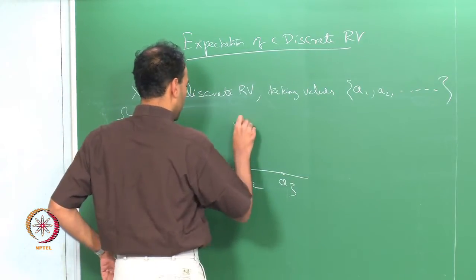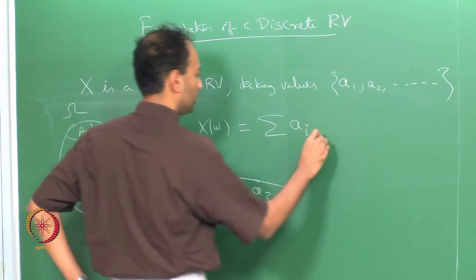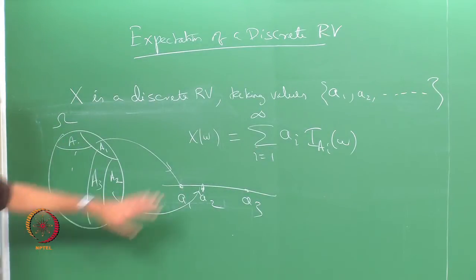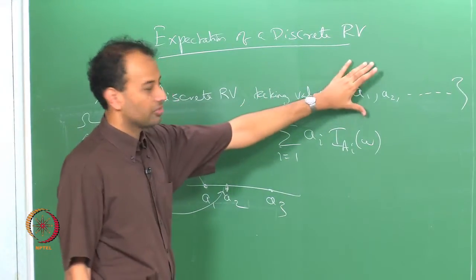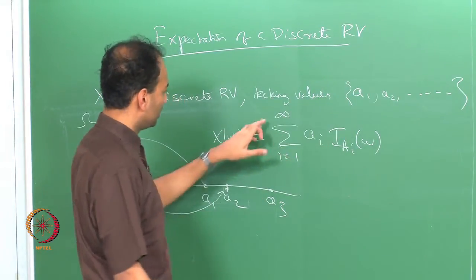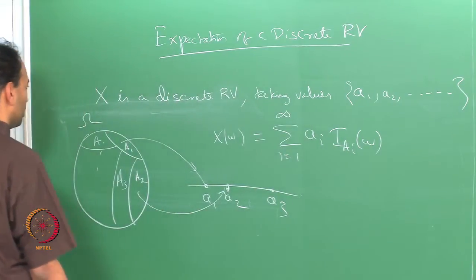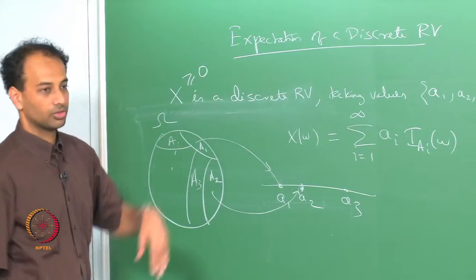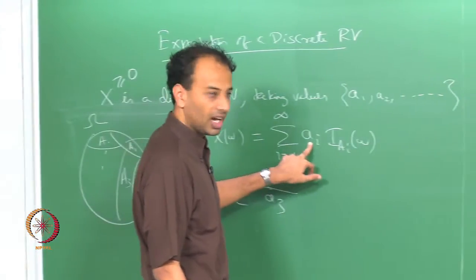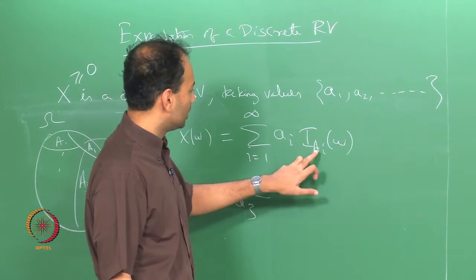A discrete random variable can be written as a countable sum of weighted indicators: x = Σᵢ aᵢ · 1_{Aᵢ}, summing i from 1 to infinity. If it takes a finite set of values it is a simple random variable. If it takes a countably infinite set of values, the sum is an infinite sum. For deriving an expression, let us say x is non-negative. The aᵢ values are non-negative, and the sets Aᵢ are those omegas which map to little aᵢ, and these Aᵢ's partition omega.